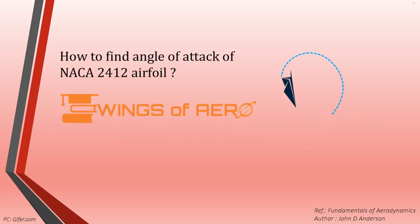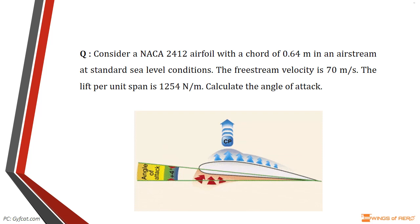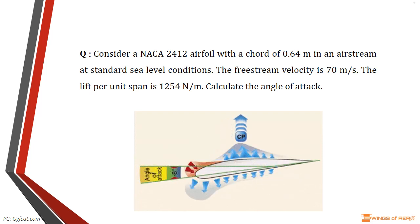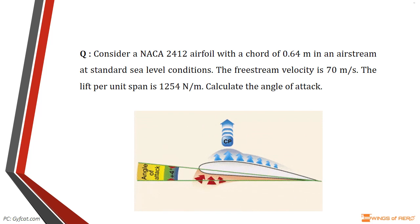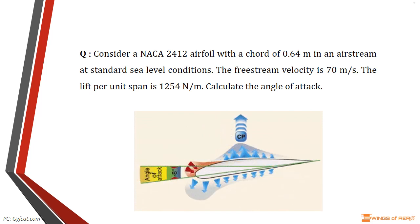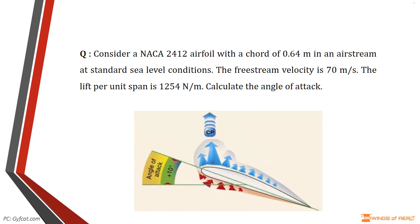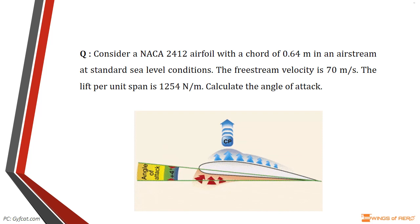Now we are going to learn about how to find the angle of attack of a NACA 2412 airfoil. Consider a NACA 2412 airfoil with a chord of 0.64 meter in an airstream at standard sea level conditions. The freestream velocity is 70 meter per second and the lift per unit span is 1254 newton per meter. Calculate the angle of attack.